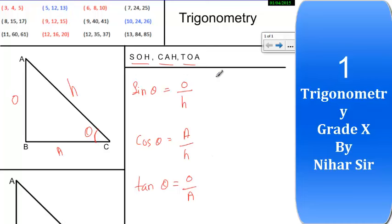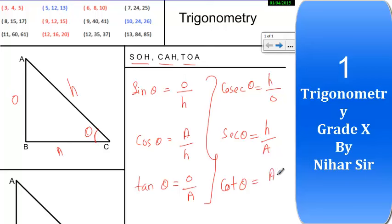Now this is hypotenuse. Cosec theta equals to hypotenuse upon opposite. Sec theta equals to hypotenuse upon adjacent. Cot theta equals to adjacent upon opposite.